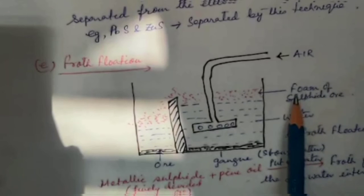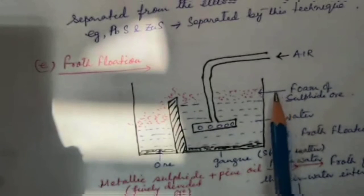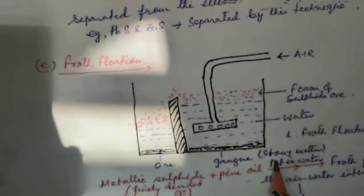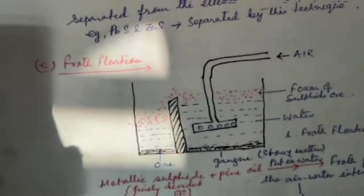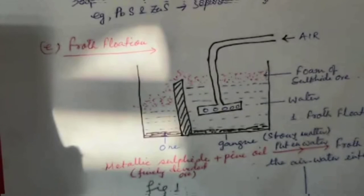At the air-water interface, the ore which is preferentially wetted by the oil rises to the surface along with the foam, while the stony matter settles down. The foam separates out and in due course settles down. This process is called froth flotation process.